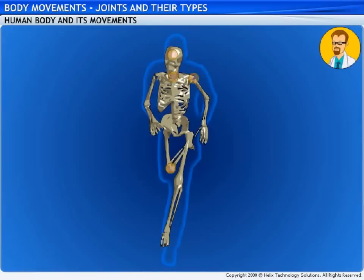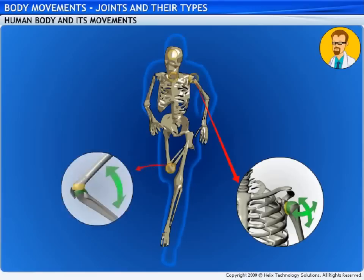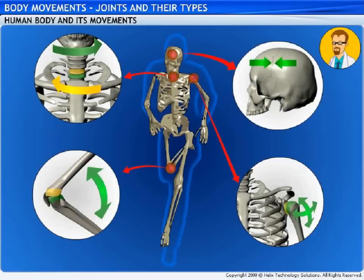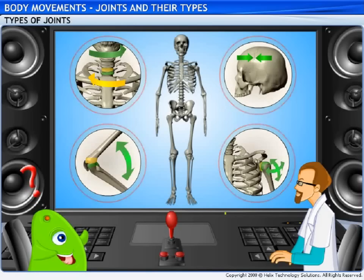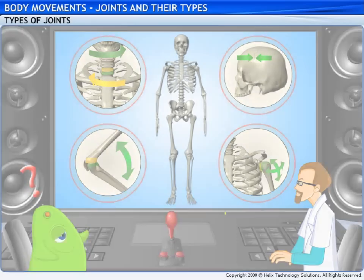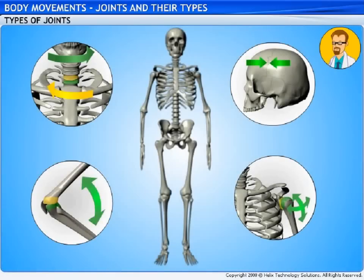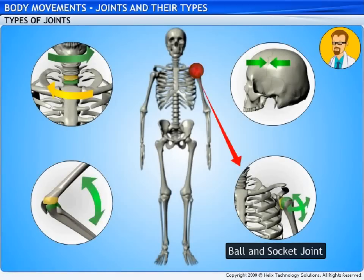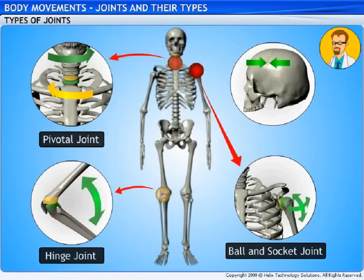That's a good question. As you noticed, each body part is capable of different movements and is therefore controlled by different types of joints. The joints in the human body include the ball and socket joint, the hinge joint, the pivotal joint, and the fixed joint.